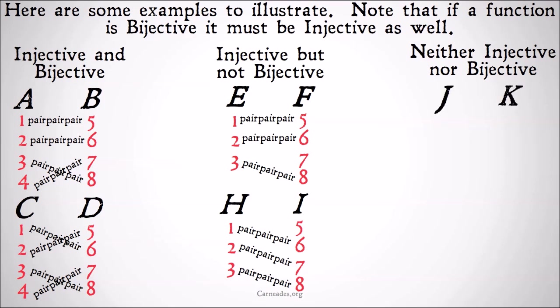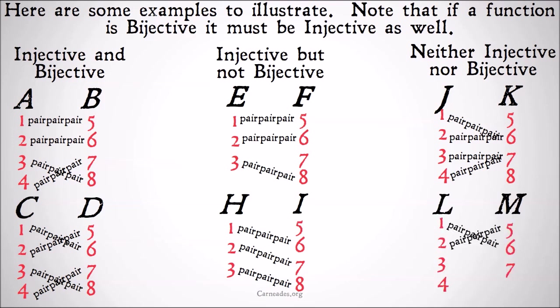Finally, for functions that are neither injective nor bijective, we have things where members of K are matched with multiple members of J — members of the class that this maps onto are matched with multiple members of the first class. As long as you're mapping onto multiples, you're not going to be injective and therefore not bijective. The same with L and M: even though all the members of M are used, because seven maps onto both three and four, it's not going to be injective and therefore it is not bijective.